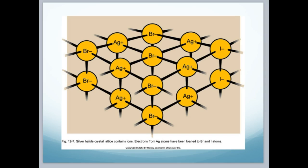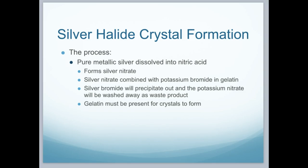Here's the structure of silver halide crystals. You can see the bromide, the silver, and the iodide. It all combines to make the phosphorescence happen. The process of silver halide crystal formation begins with pure metallic silver dissolved into nitric acid, forming silver nitrate. Silver nitrate is combined with potassium bromide and gelatin. The silver bromide will precipitate out, and the potassium nitrate will be washed away as a waste product, and the gelatin must be present for the crystals to form.